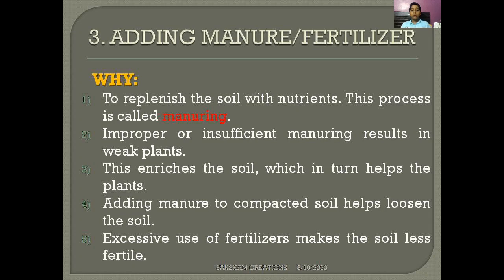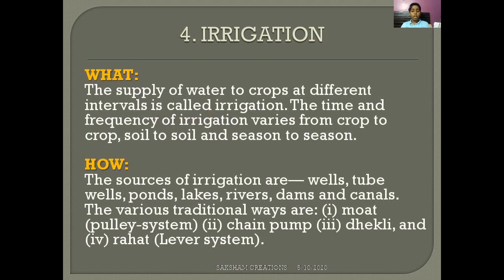Why is it important to add manure and fertilizer? First, it replenishes the soil with nutrients — this process is called manuring. Second, improper or insufficient manuring results in weak plants. Third, it enriches the soil, which helps plant growth. Fourth, adding manure to compacted soil helps loosen it. Fifth, excessive use of fertilizer can make the soil less fertile.